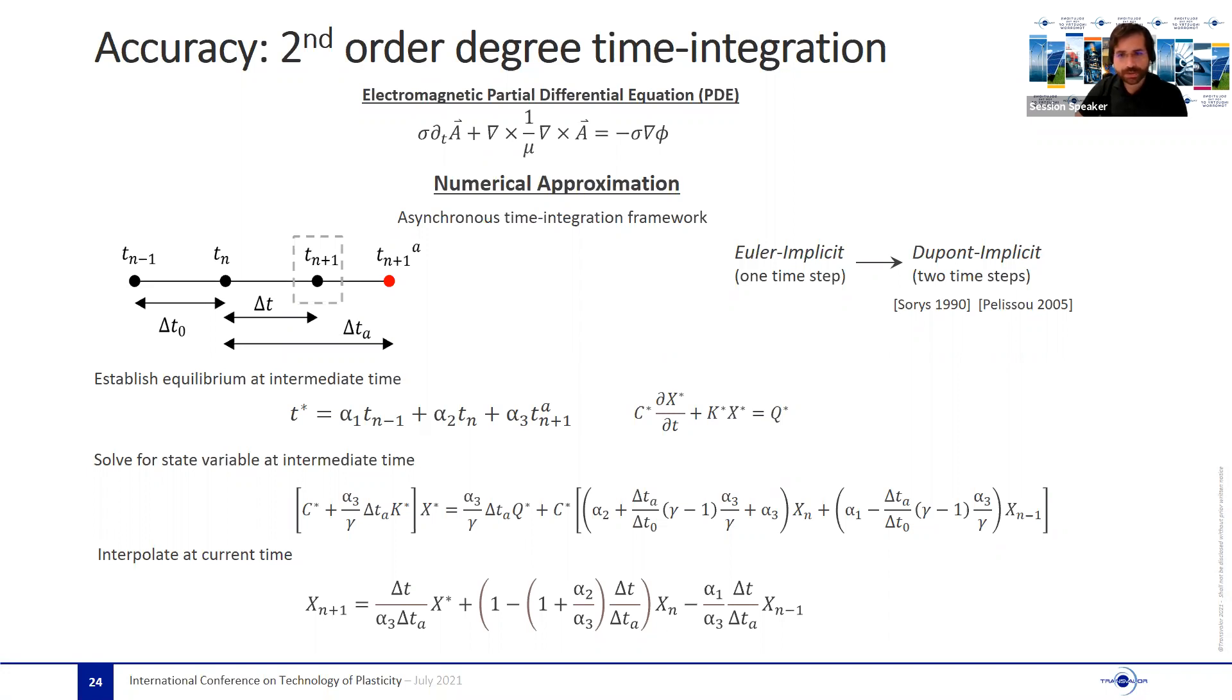One of the most famous methods in literature for time integration is the Runge-Kutta family, which is typically applied to explicit representation of the partial differential equations. Since we have chosen to develop all of our solvers using implicit resolution, we needed to find a different method that enables the best possible convergence with minimal added algorithmic complexity.